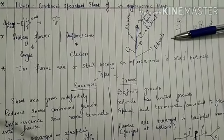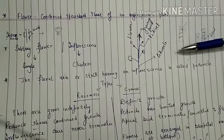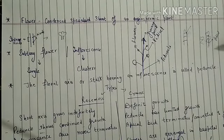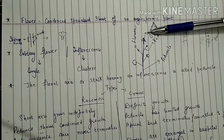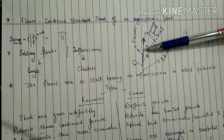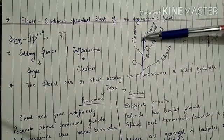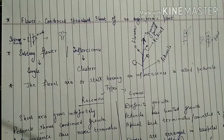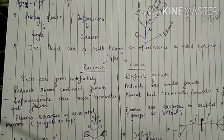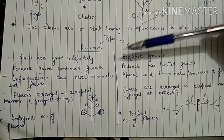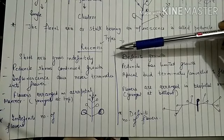In racemose inflorescence, the main axis continues to grow indefinitely. The flowers are arranged in acropetal manner, meaning the youngest flowers are observed at the top and the oldest flowers are at the base.